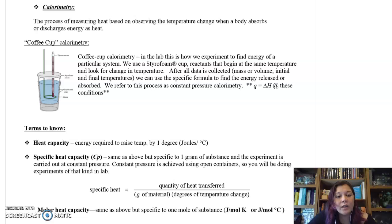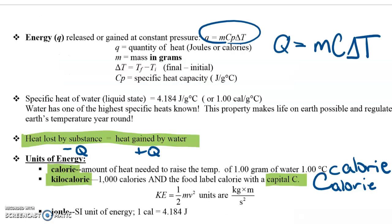As you can see here, if the pressure is constant, we can basically assume that Q is also our delta H. A couple of things worth pointing out here are that the Q equals MC delta T formula is the same. They're just including that subscript for P for specific heat capacity.